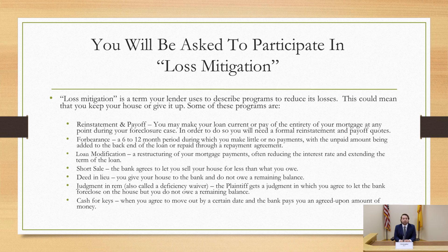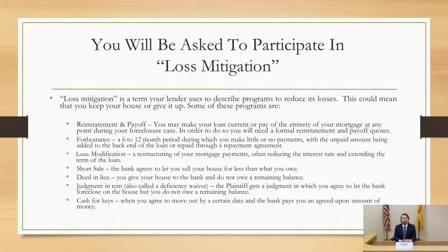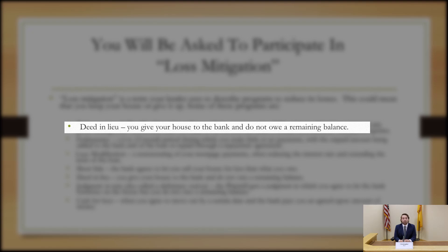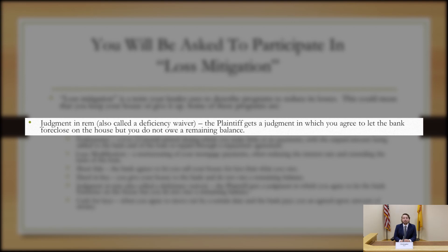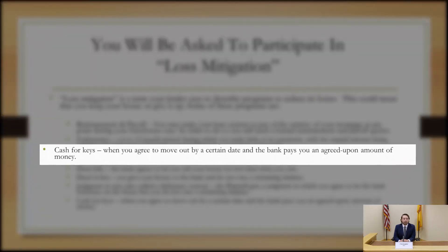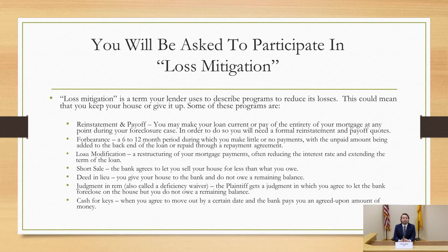Now for non-retention options. The first is a short sale — when the bank agrees to let you sell your home for less than what you owe. Following that is a deed in lieu, where you transfer the deed of the property back to the bank and you do not owe a remainder balance. The last option is a stipulated in rem judgment — you and the lender agree to a judgment in which the bank forecloses on the property but you do not owe a remainder balance. Something that can sometimes accompany a non-retention option is called cash for keys or relocation assistance, where the plaintiff agrees to pay you a certain amount of money provided you vacate by a certain date and leave the property in broom-swept condition. This payment is usually only made after the homeowner has moved out.